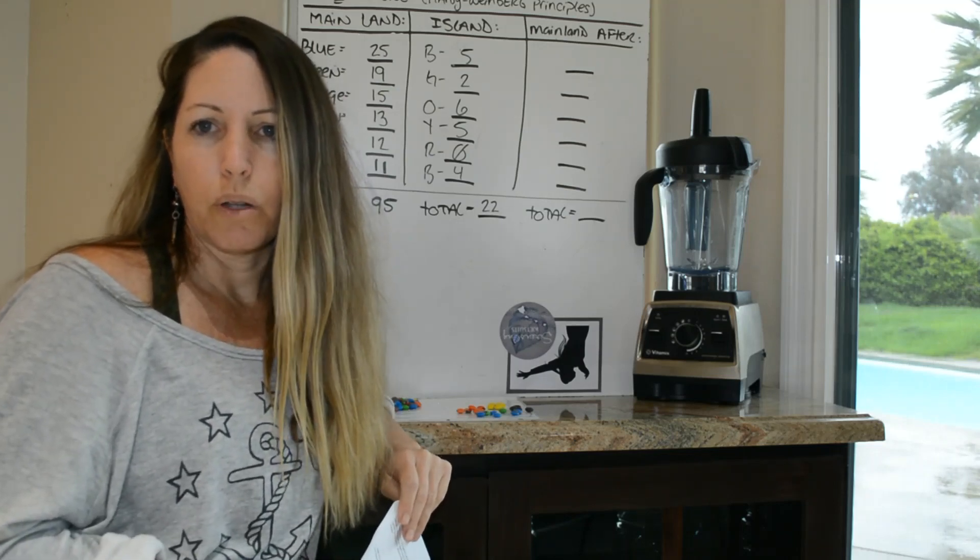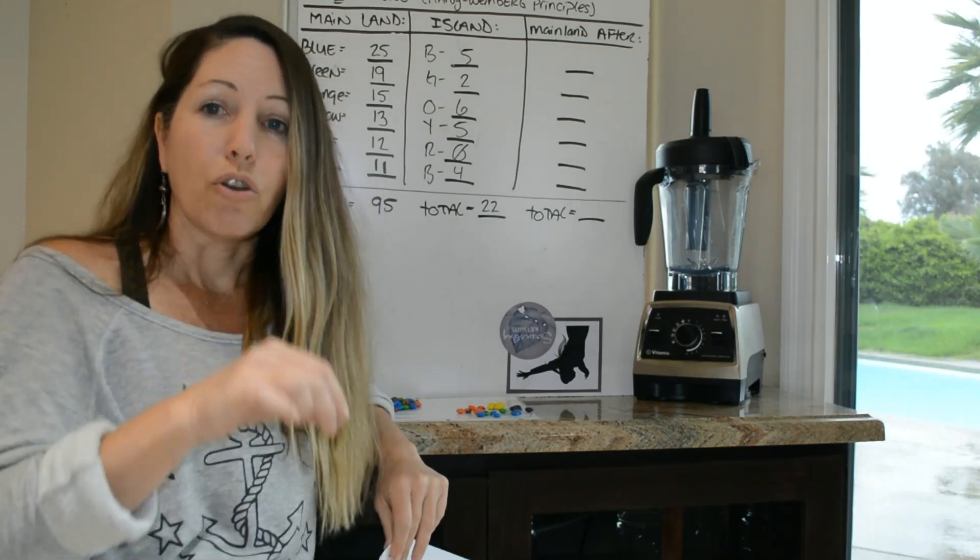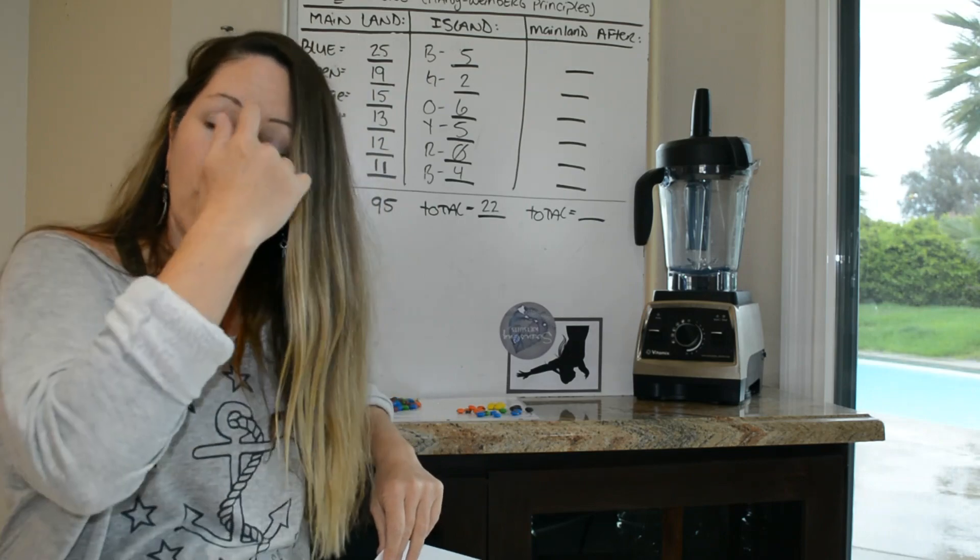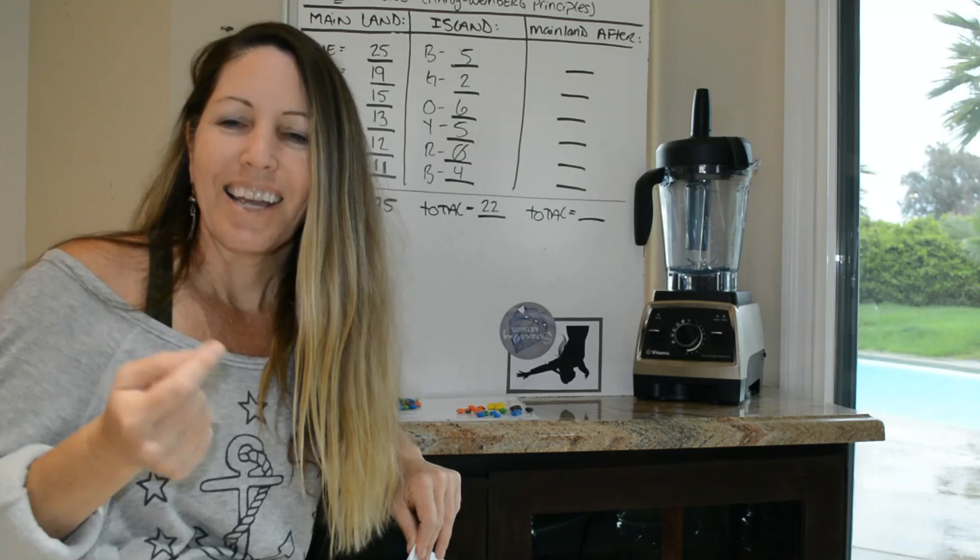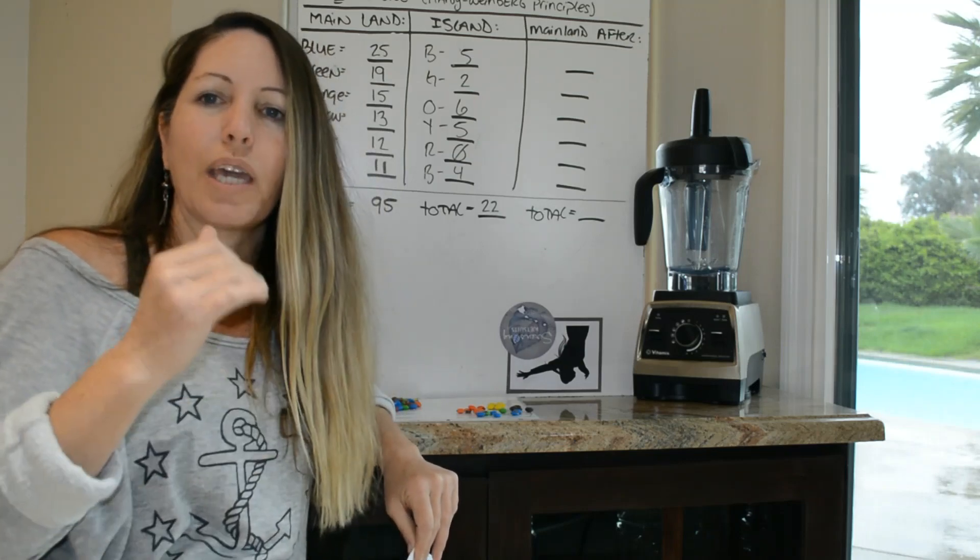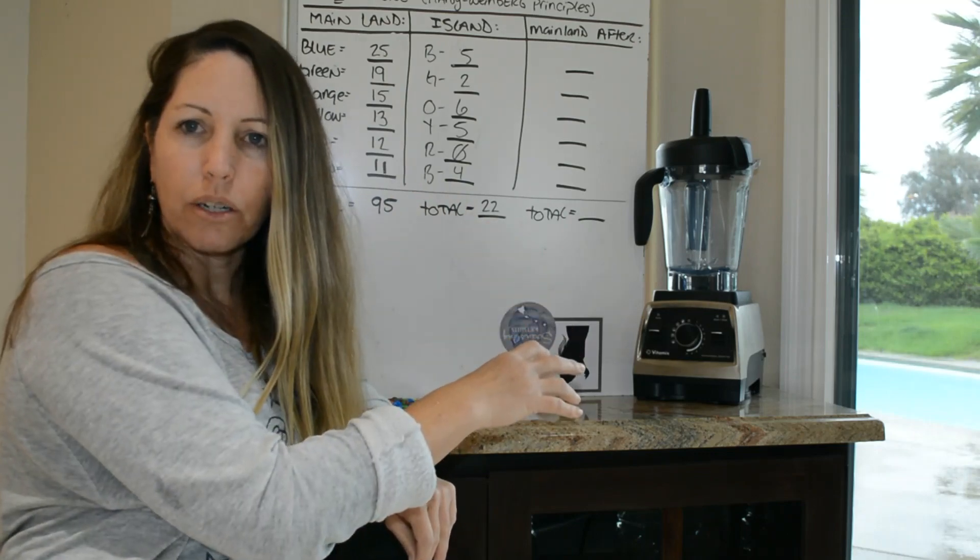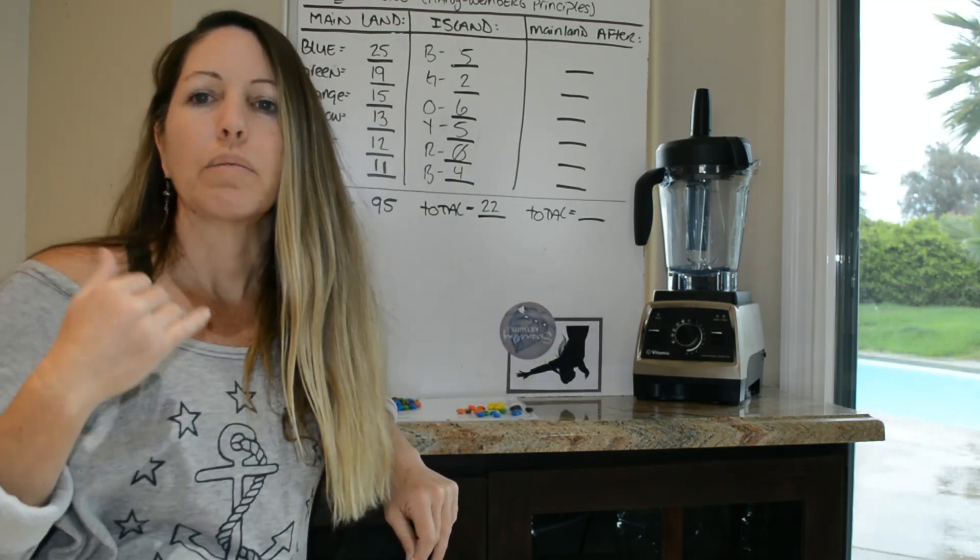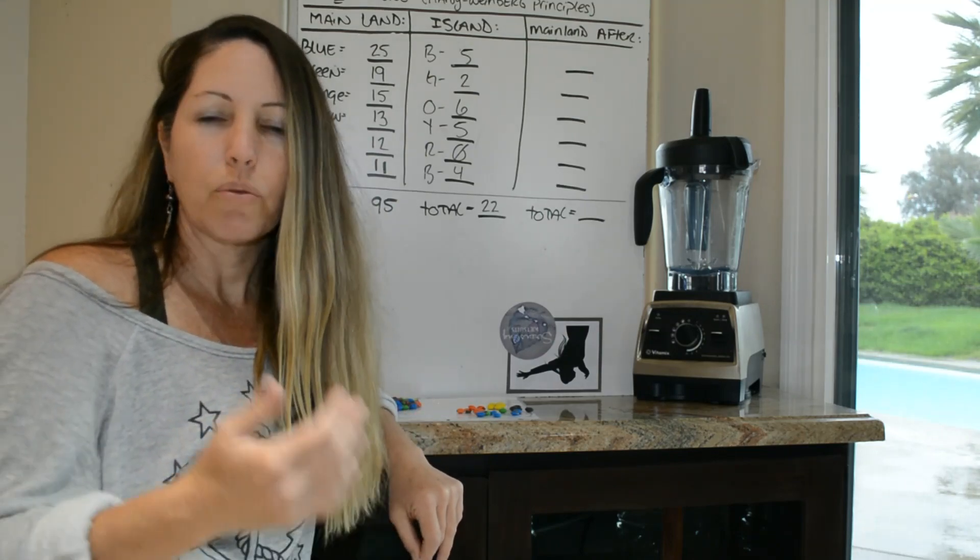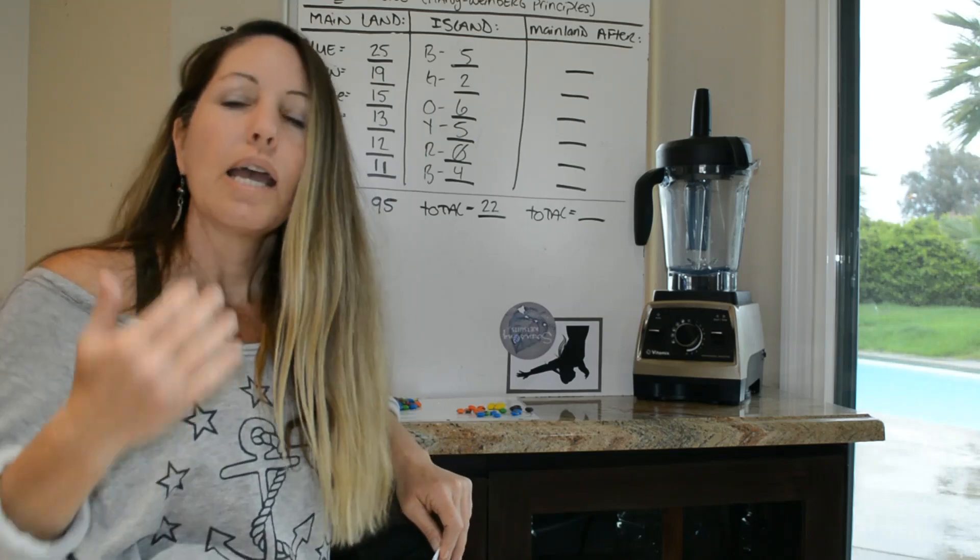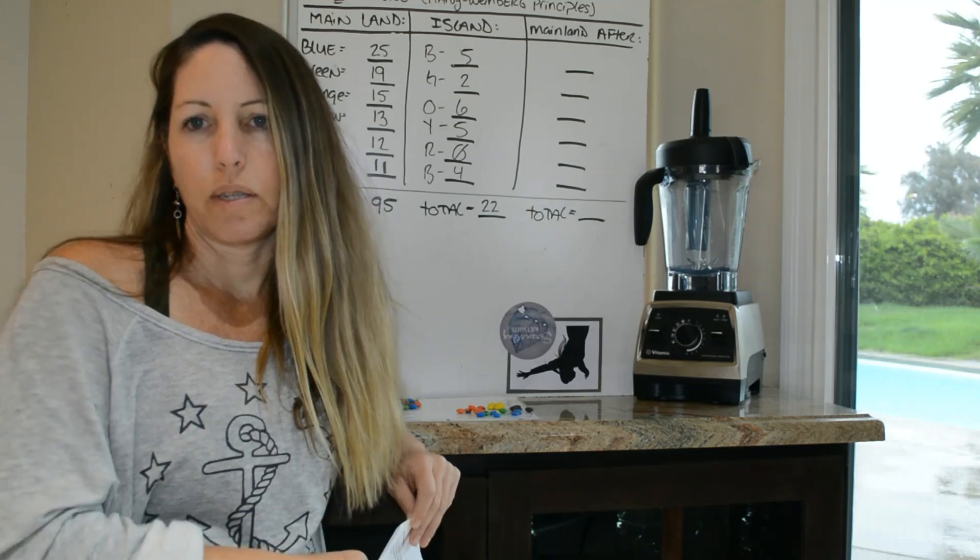Keep in mind, Hardy-Weinberg equilibrium, one of the five factors that you need in order to evolve is no migration. So in order to not evolve, you cannot migrate. So the fact that a chance event happened here means that Hardy-Weinberg principle has been broken. Migration is happening because of genetic drift. Whether the species likes it or not, they've been moved to a different area. And because of that, evolution will occur within the species.